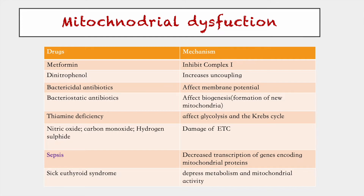Other important conditions include sepsis, which decreases the transcription of genes encoding mitochondrial proteins. Hormonal imbalances like the sick euthyroid syndrome, seen in critically ill patients, depresses metabolism and mitochondrial activity.